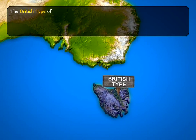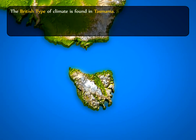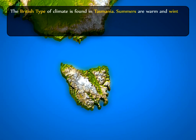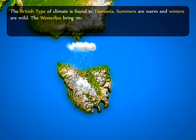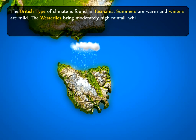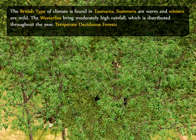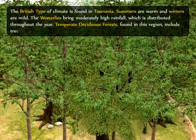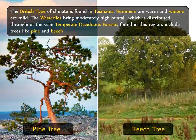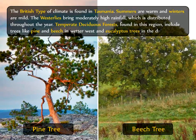The British type of climate is found in Tasmania. Summers are warm and winters are mild. The westerlies bring moderately high rainfall which is distributed throughout the year. Temperate deciduous forests found in this region include trees like pine and peach in the wetter west and eucalyptus trees in the drier east.